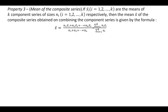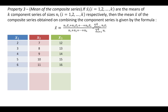This property means that if we are given a number of series like x1, x2, and x3, and we have calculated the mean of each series — suppose x̄1, x̄2, and x̄3 — then the combined mean of the series will be given by the formula x̄ = Σ nᵢ x̄ᵢ / Σ nᵢ.